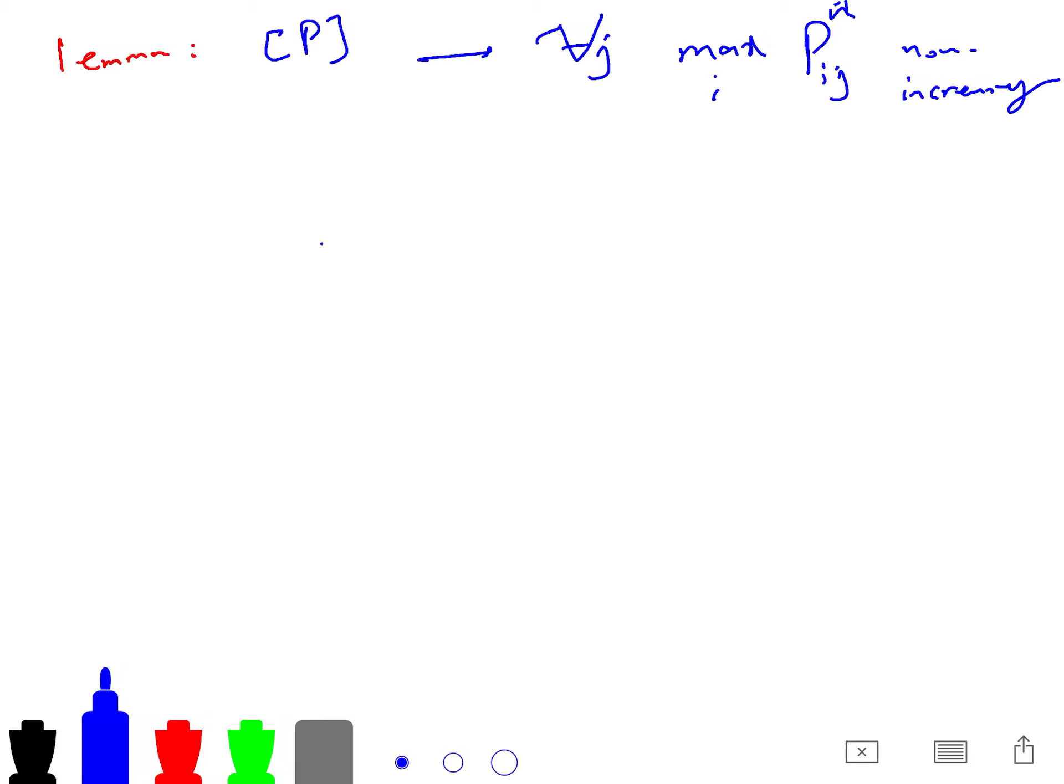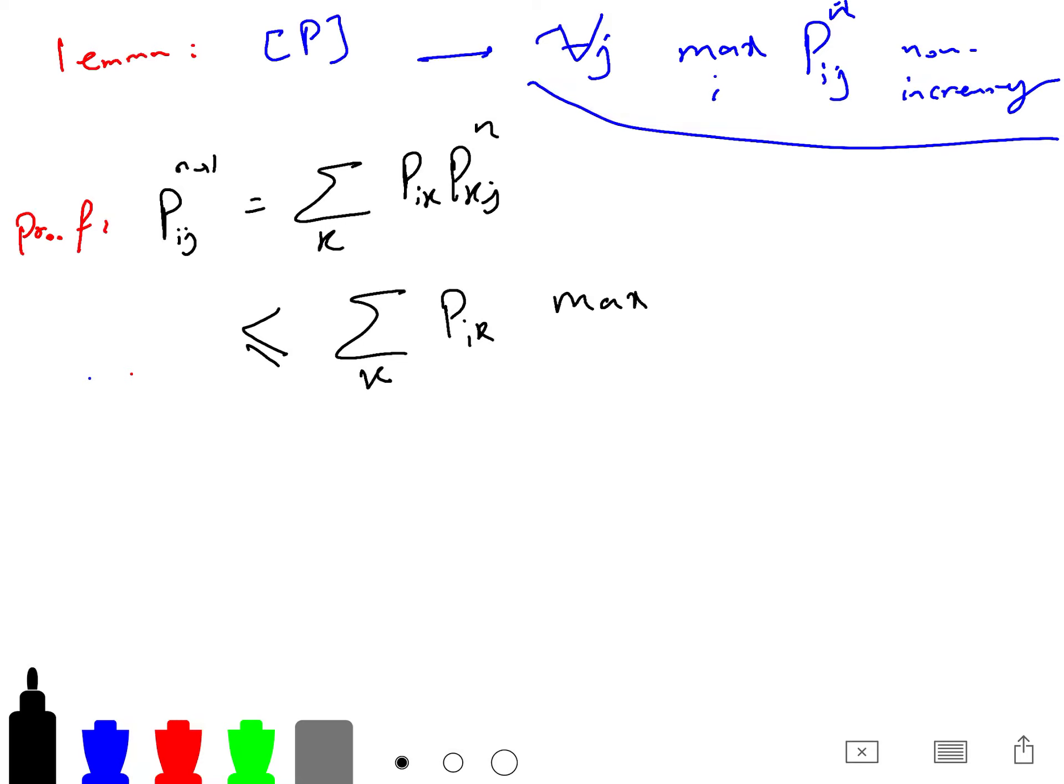So because we don't lose anything, we just prove one of them, for example, the maximum. So we know that the proof is so simple. Because we just write pij to the n plus 1, which is equal to summation over k, pik pkj n. And we just use the property of maximum, which is pik over k. And as I said, the property of maximum is maximum is greater than any other things. So we're just using the property of maximum. So this is just maximum of plj to the n over all l.